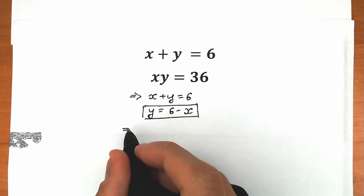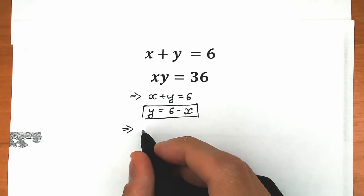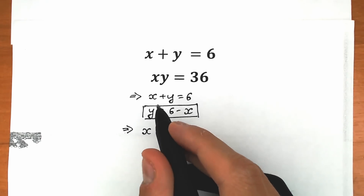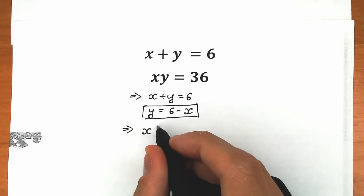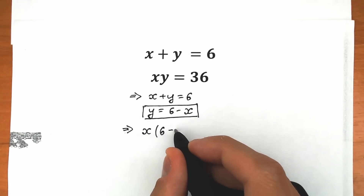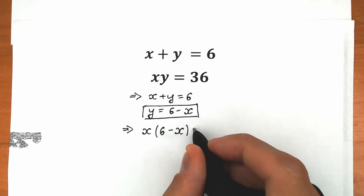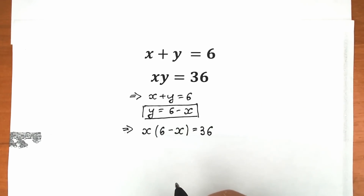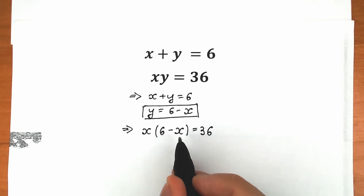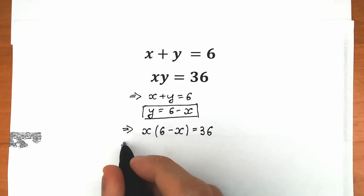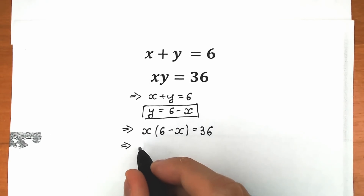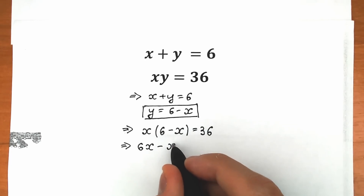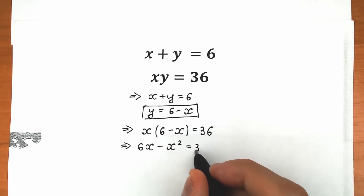So we have x times, not y, but 6 minus x — this is the same as y — so we have x times (6 minus x) equal to 36. Right now let's multiply x times this parentheses. From here we have 6x minus x squared equal to 36.